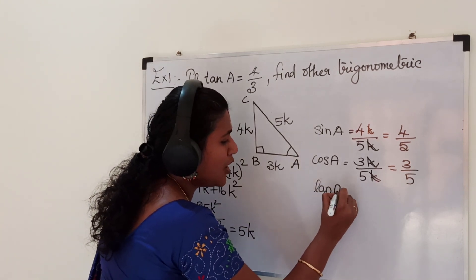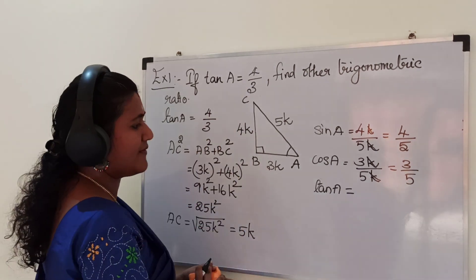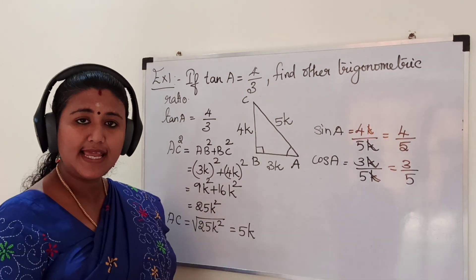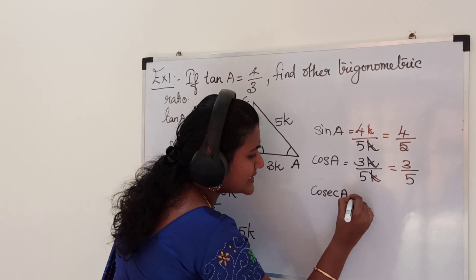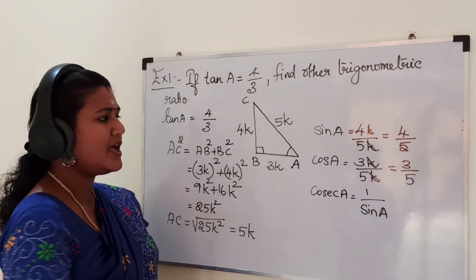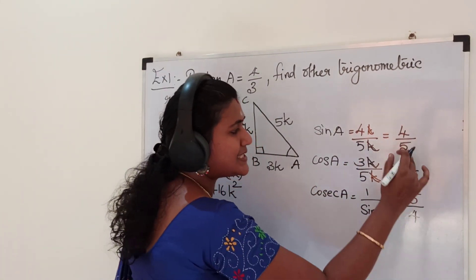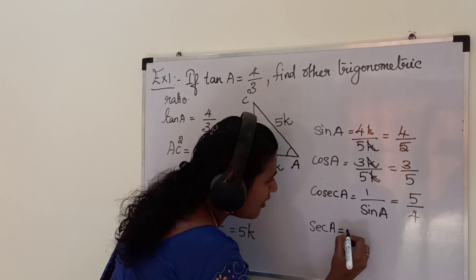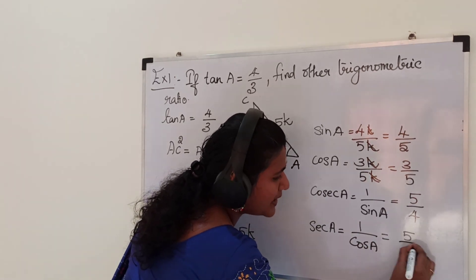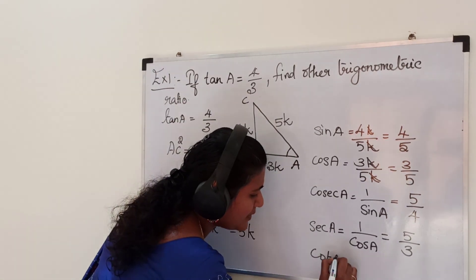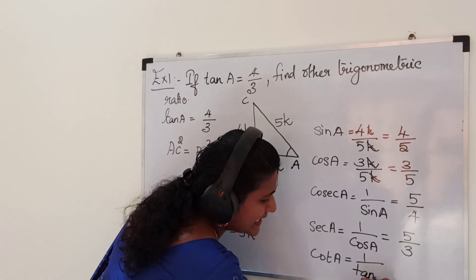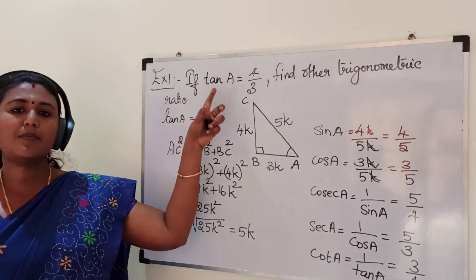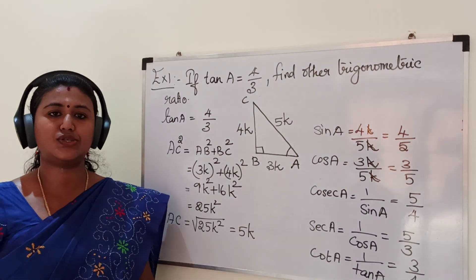Tan A is already given as 4 by 3, so we need not calculate it again. Since we have sin A and cos A, the remaining reciprocal ratios are easy to write. Cosec A is the reciprocal of sin A, so cosec A = 5 by 4. Sec A is the reciprocal of cos A, so sec A = 5 by 3. Cot A is the reciprocal of tan A, so cot A = 3 by 4. So if one trigonometric ratio is given, we can find the remaining trigonometric ratios. Thank you, children.